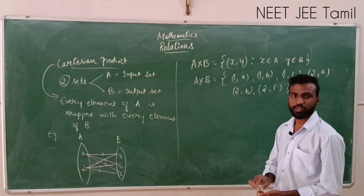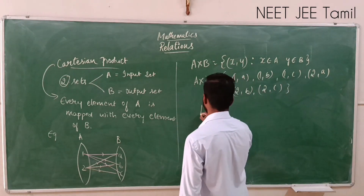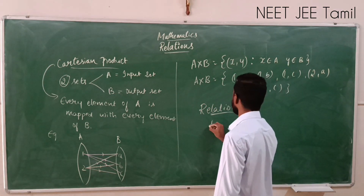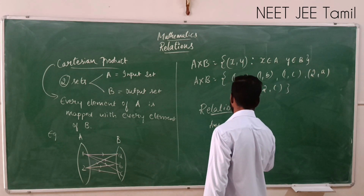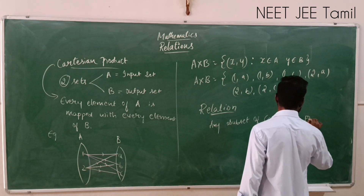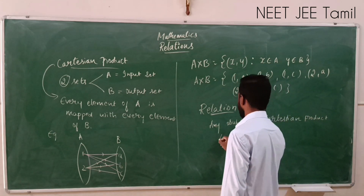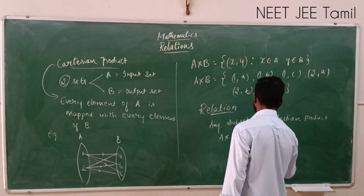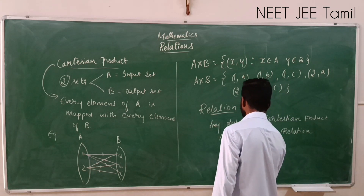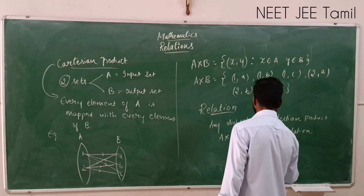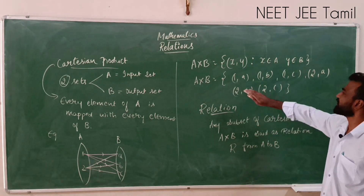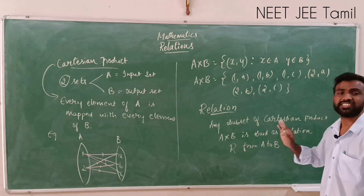Now let us go a little further to Relations. Any subset of Cartesian product A cross B is called a relation R from A to B.